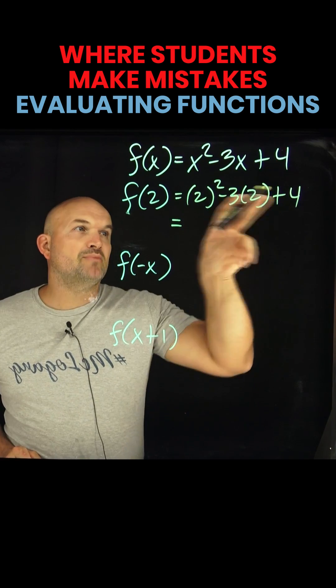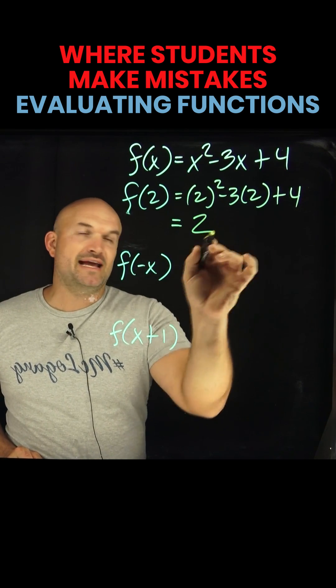So 2 squared is going to be a 4, plus a 4 is going to be an 8, and then minus a 6, so that's going to give me a value of 2.